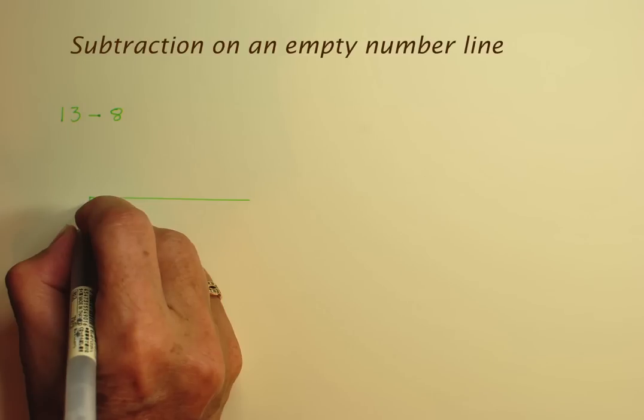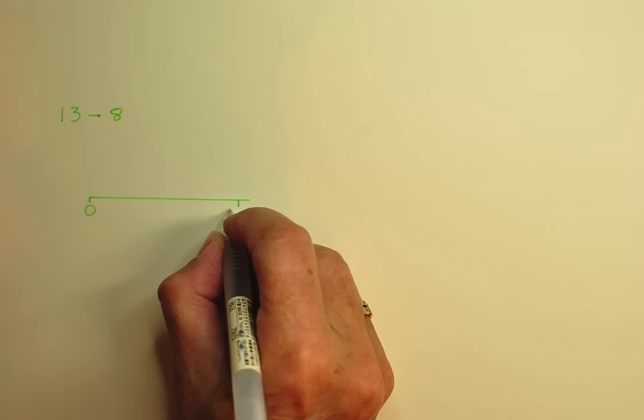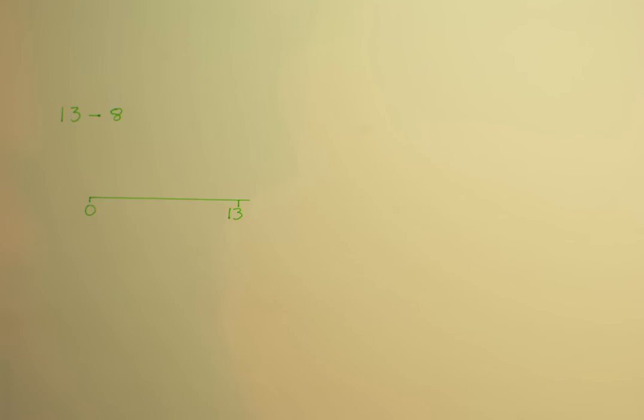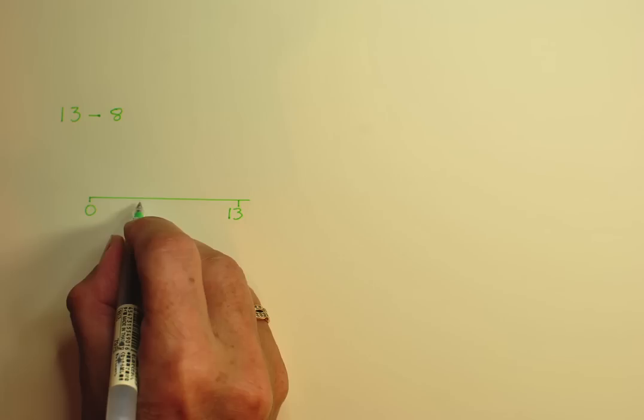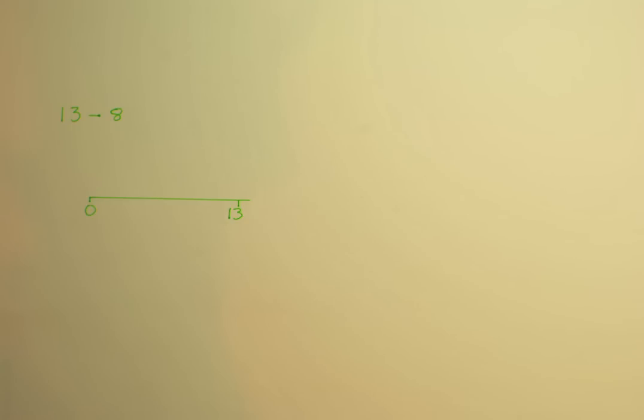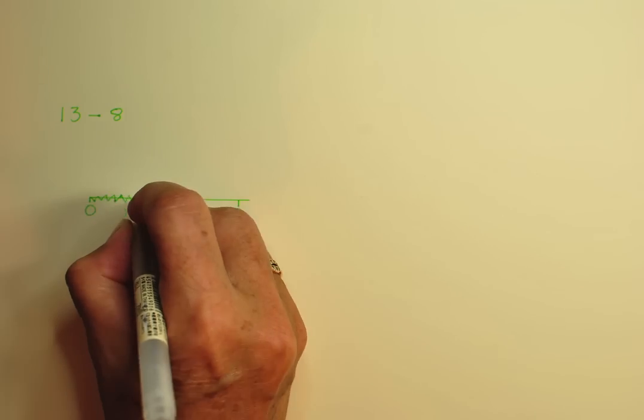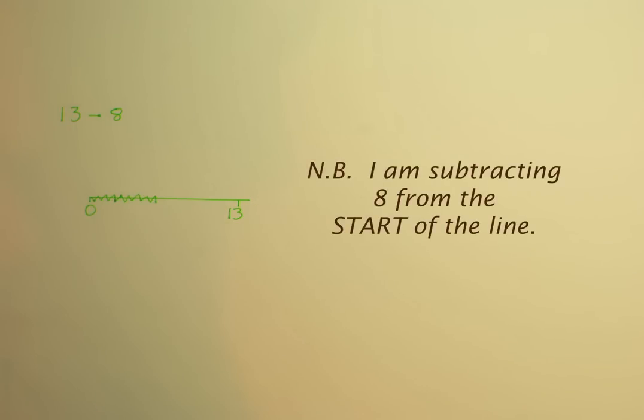Now I'm going to show you some subtraction. Let me talk you through 13 minus 8. Here's my empty number line. Just to start with, I'm going to label the left end of my number line as 0. Now, when I mark and label the point that represents 13, I have a defined length of line that we can see is worth 13 because it runs from 0 to 13. Out of the 13, I need to subtract 8 and so I'm going to scribble out a length of line that represents 8 and label the number 8 on my line.